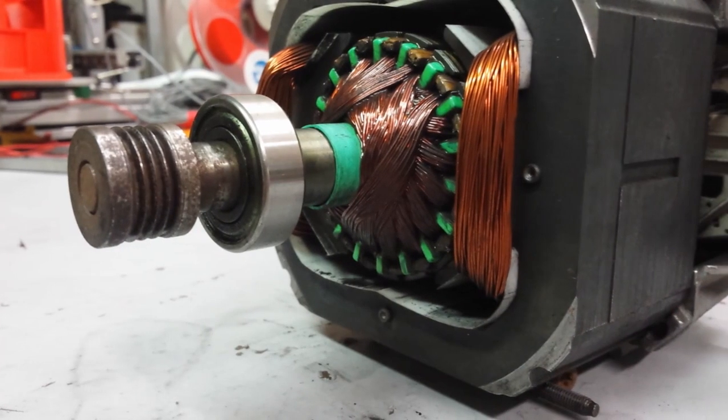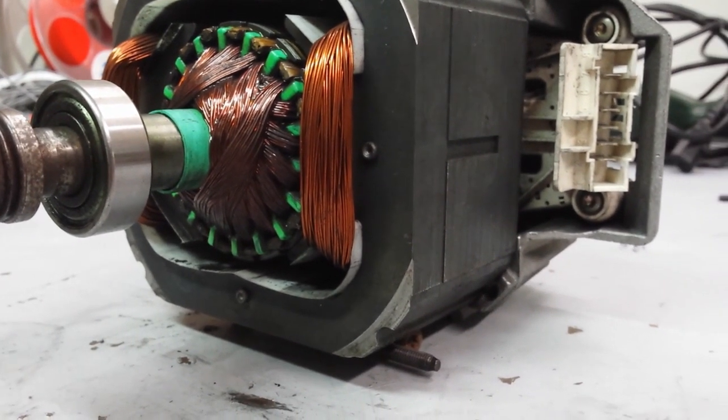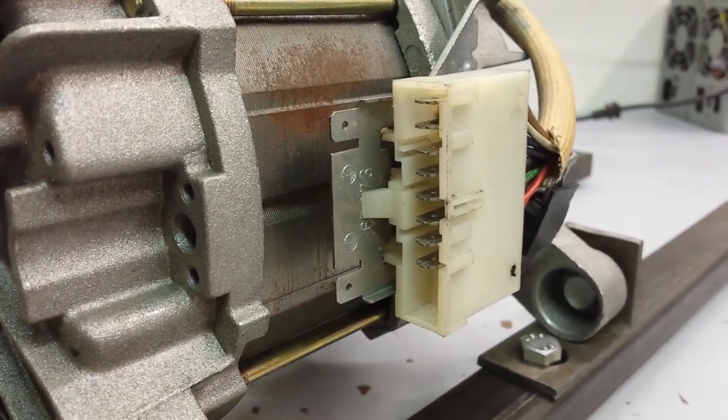In washing machines we need to change the rotation direction so all turns of stator and rotor are accessible. That is why the terminal box has so many points.